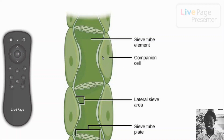Because sieve tube elements have no nucleus, each one is associated with a companion cell — for every sieve tube element there is a companion cell. The companion cell contains a nucleus, as well as numerous mitochondria and other organelles that are absent from the sieve tube element. The companion cell carries out normal cell processes and supplies energy to the sieve tube for conduction of materials.